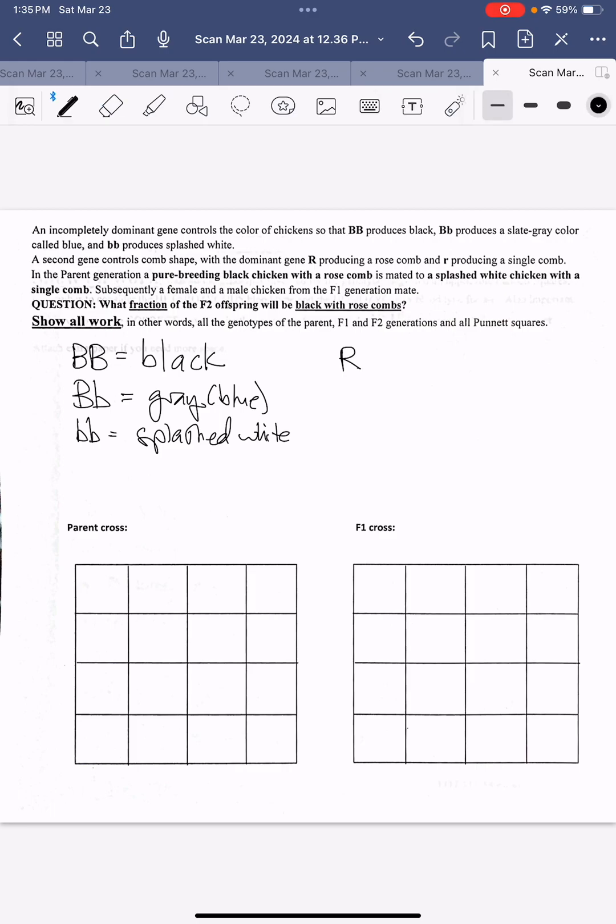Therefore, big R, big R or big R, little r genotype can produce the rose comb, while only little r, little r produces a single comb.